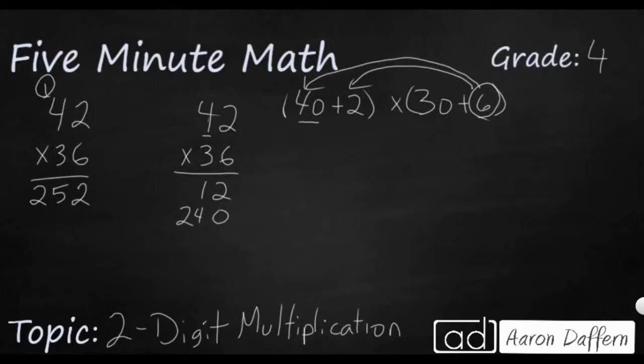Now let's look at this next one. We're going to take this 30 and multiply it by the 2. This 3 right here is not a 3, it's a 30 because it's in the tens place. So 30 times 2 is the same as 3 times 2, that's 6 with a zero, so 60.